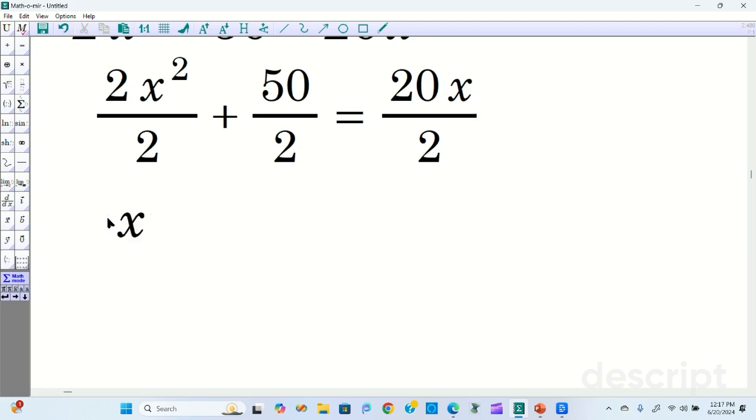So the twos cancel leaving x squared. 2 divided by 2 is 1. So this 1x squared plus 50 divided by 2 is 25. 20 divided by 2 at the end is 10x.